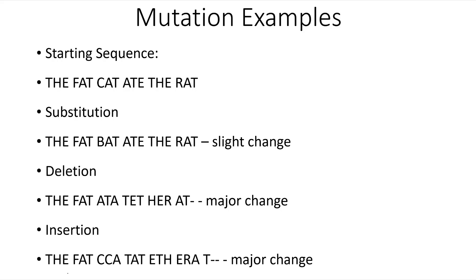Now let's say at that C in 'cat,' what if we just delete it, but everything has to shift so we still have three-letter words? Well, we have 'the fat' — that hasn't changed — but then ATA, TET, HER. Some of those might be words, but the meaning of that sentence has been lost. No longer are the letters grouped into meaningful words. Likewise, if we add an extra C, we see with our insertion mutation: 'the fat' and then CCA, TAT, ETA, TRA. None of those were in the original sentence, and the meaning of that sentence has been lost. So insertion and deletion mutations have a bigger impact in changing the meaning of a gene than simply substituting one letter for another.